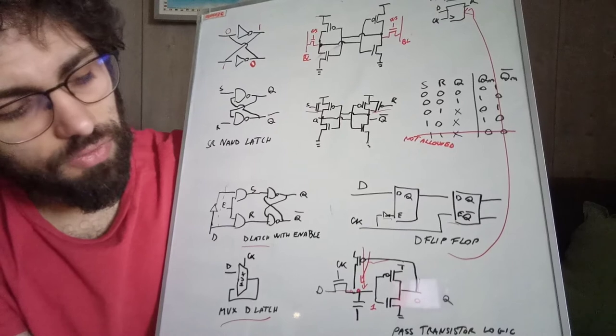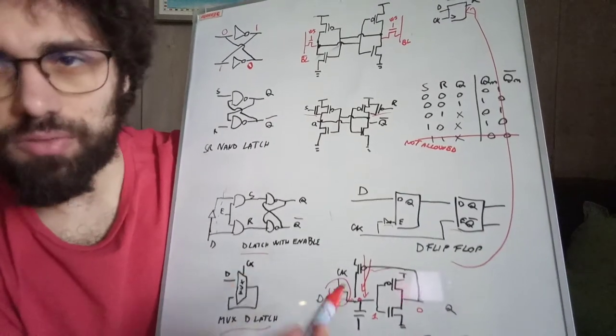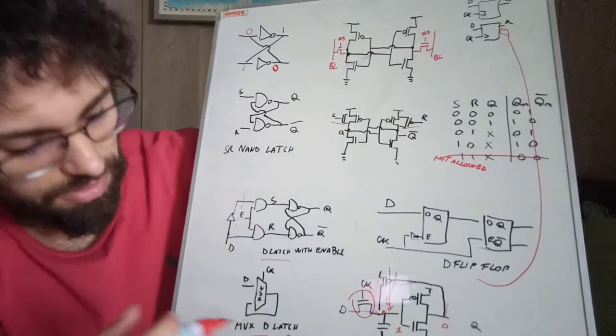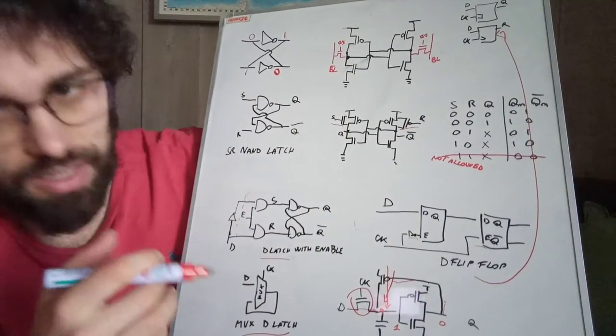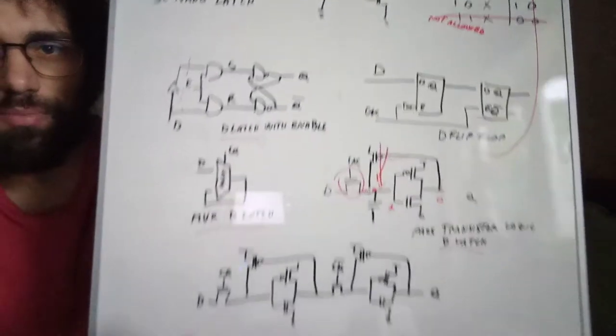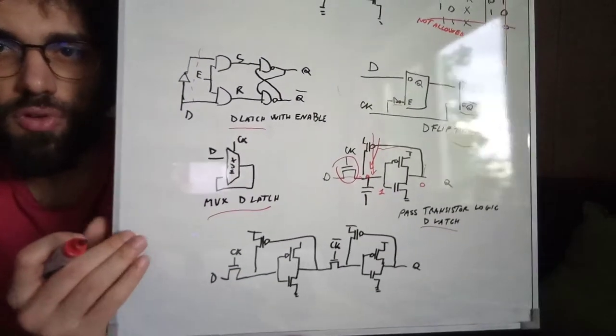And this is what is pass transistor logic. So the signals go through but it gets weaker as it goes.